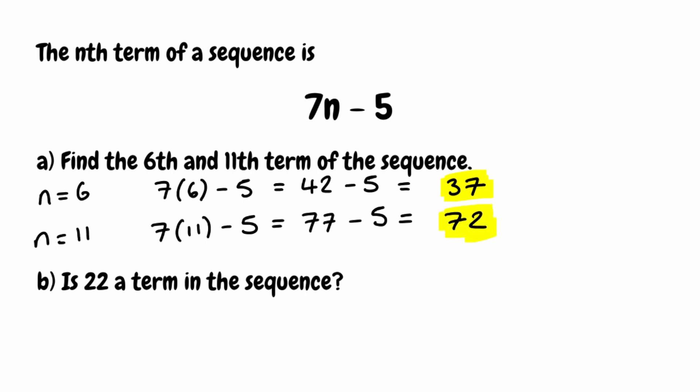We then want to see if 22 is a term in the sequence. Whenever we want to check if a value is in the sequence, we put it equal to the nth term and solve for n — we should get an integer. If we don't, then we know it's not in the sequence. So we set 7n take away 5 equal to 22.